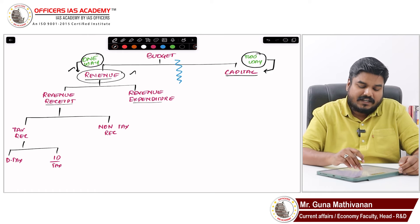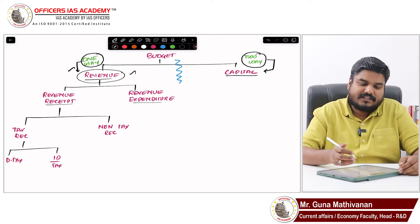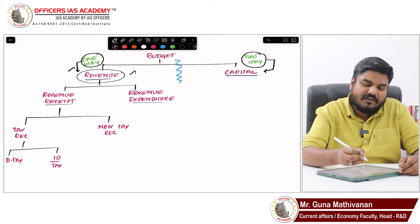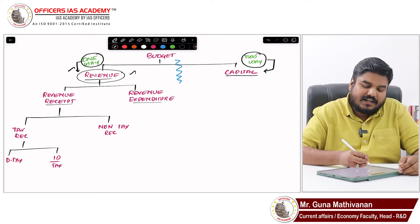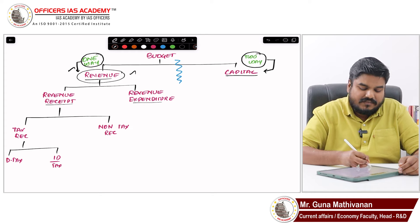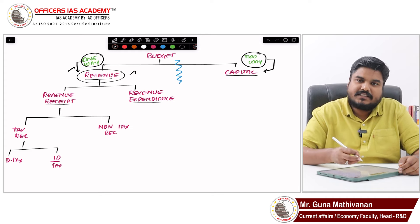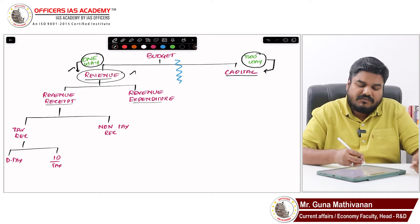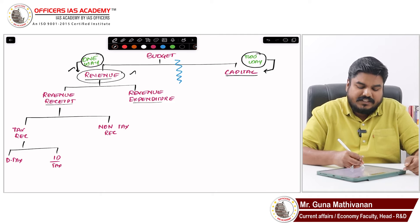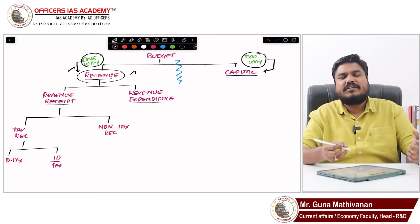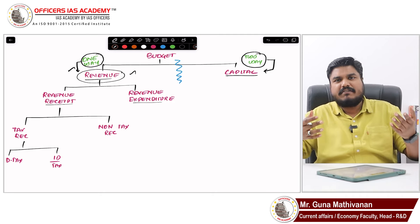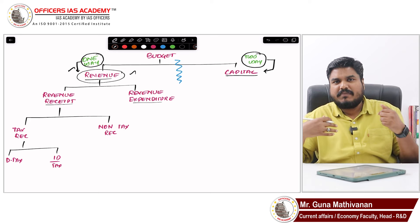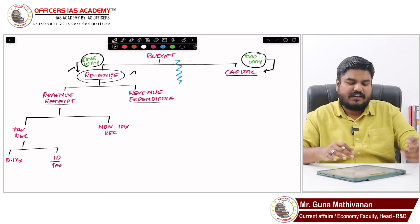An example of direct tax is income tax. An example of indirect tax is GST. You pay tax and the government will not give that money back — so it is a one-way transaction.